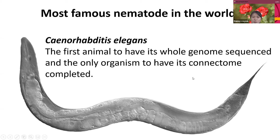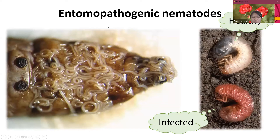There are also beneficial nematodes. Entomopathogenic nematodes are insect-parasitic nematodes. As you can see, these nematodes are coming out of a dead larva, and with entomopathogenic nematode infection the insects die. So there is huge potential for entomopathogenic nematodes to be used as a biological control agent.